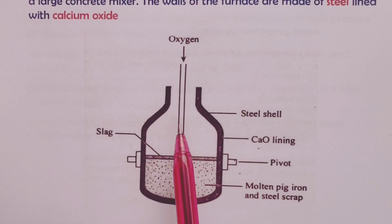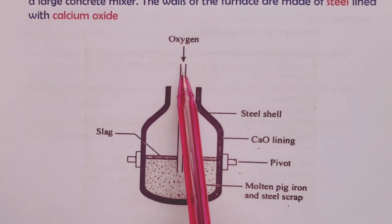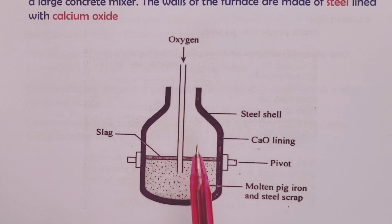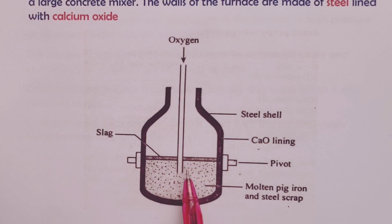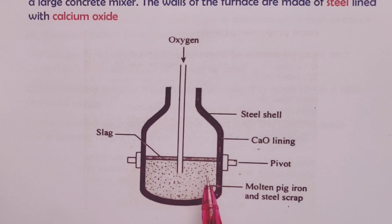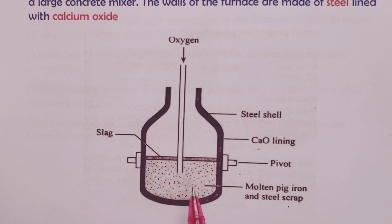Below is our diagrammatic representation of the tilting furnace where the basic oxygen process takes place. The sole purpose is to reduce the carbon content of pig iron. Molten pig iron is mixed with steel scrap in the furnace. A high-pressure jet of oxygen is then blown into the mixture. The oxygen reacts with carbon in the pig iron, oxidizing it to carbon monoxide and carbon dioxide, which escape as gases. The contaminating sulfur is also oxidized to sulfur dioxide, which escapes as a gas.